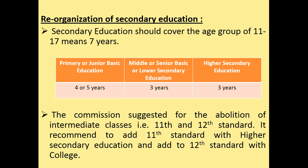The recommendation of the Secondary Education Commission was that the intermediate class — Class 11th and 12th standards — should be abolished. It recommended adding Class 11 with higher secondary education and Class 12 with college. That is why the higher secondary education duration should be three years, from Class 9 to Class 11.